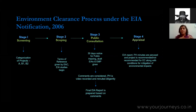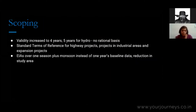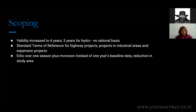Now let's move to understanding what is changing in this process as per the 2020 notification. First, this four-stage process has been changed into a three-stage process where screening has been deleted, because there is a clearer demarcation of what is a B1 and a B2 project. The first step as per the 2020 draft is scoping, and some of the key changes in the scoping process are significant.